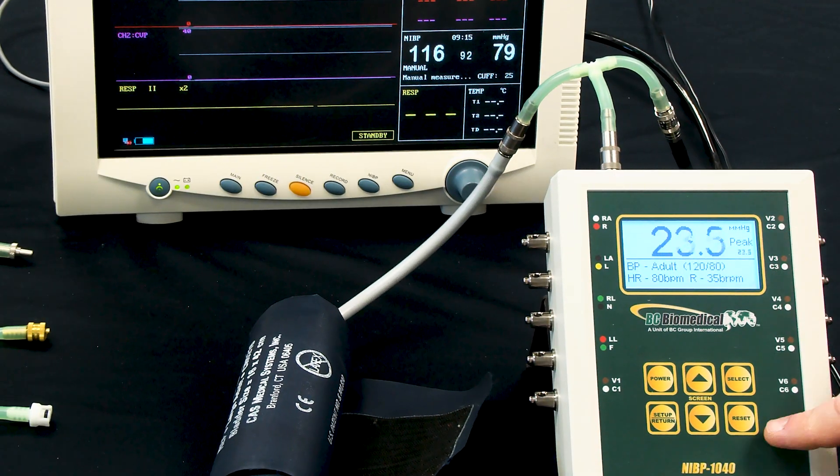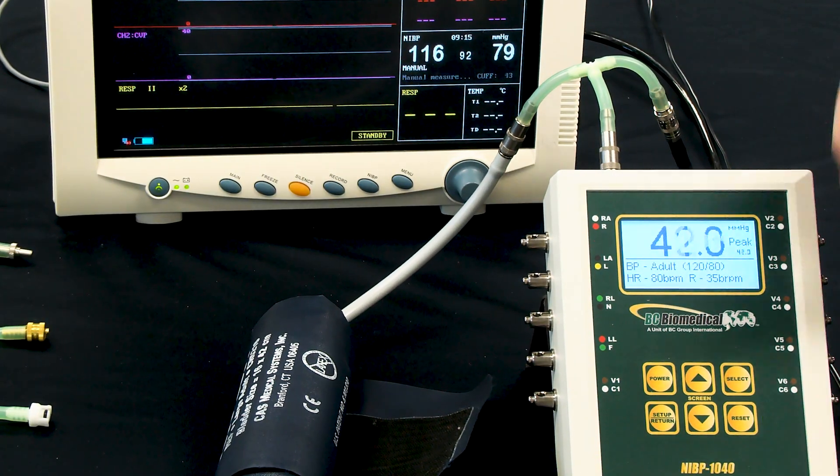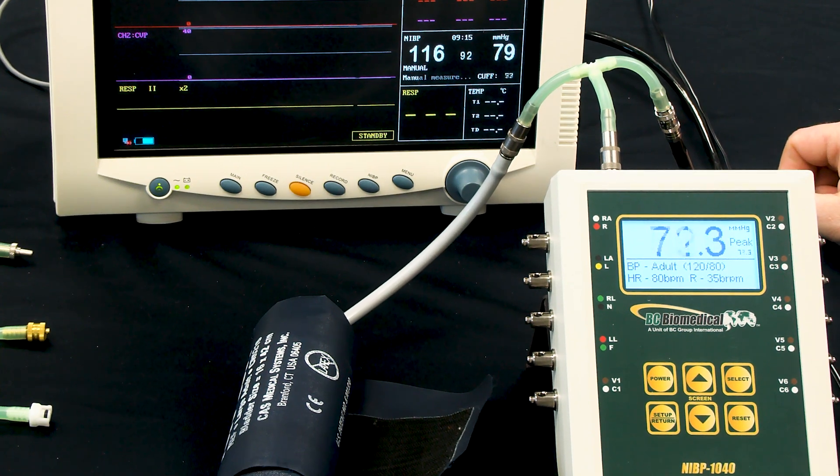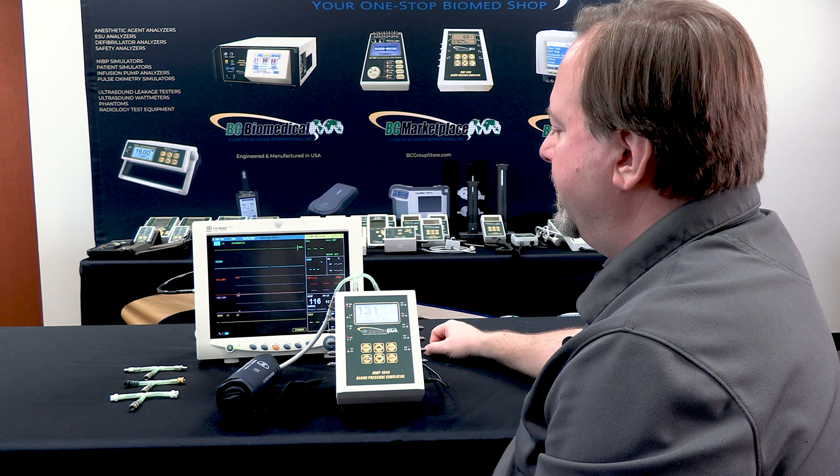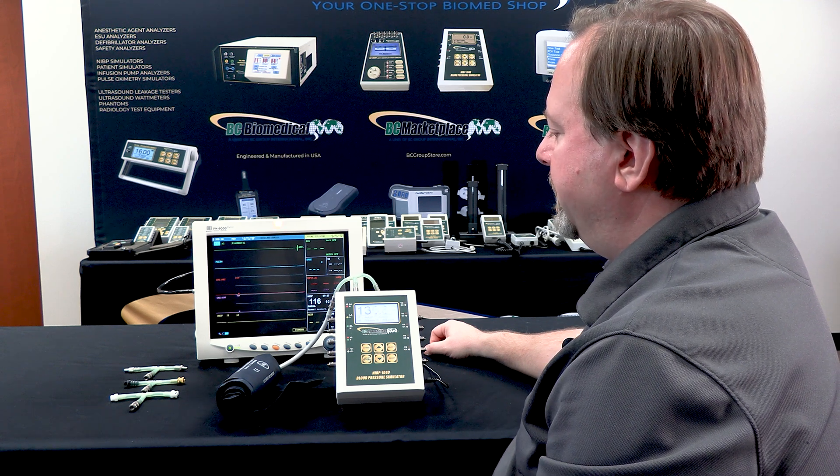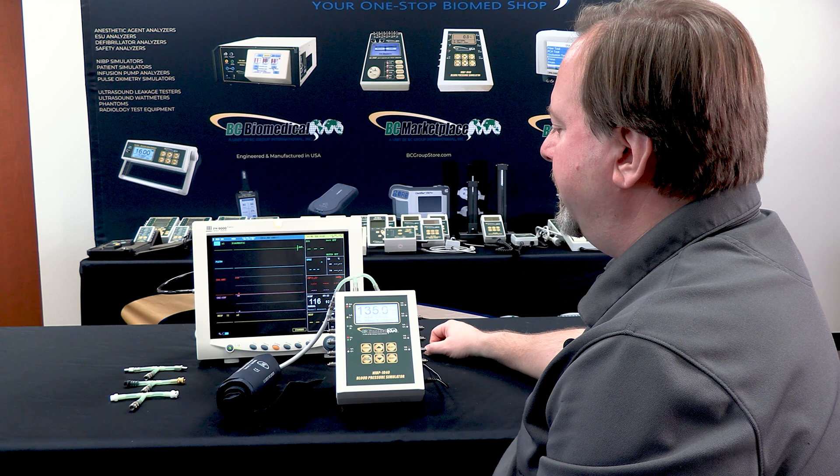So just to make sure that now we're at a stable state, to reset the peak pressure, all I have to do is press the reset button on the NABP 1040, and that will reset that reading. And we'll allow it to get a measurement again and we'll see what it comes up with.